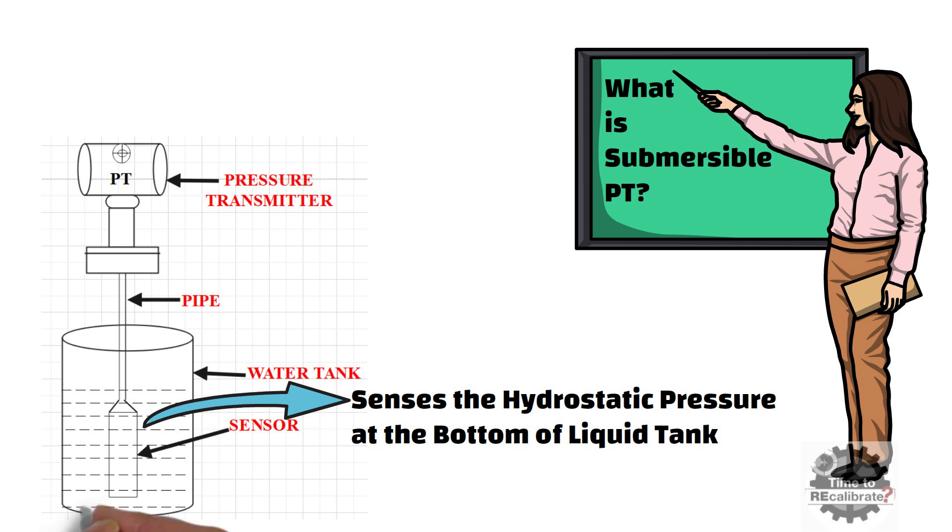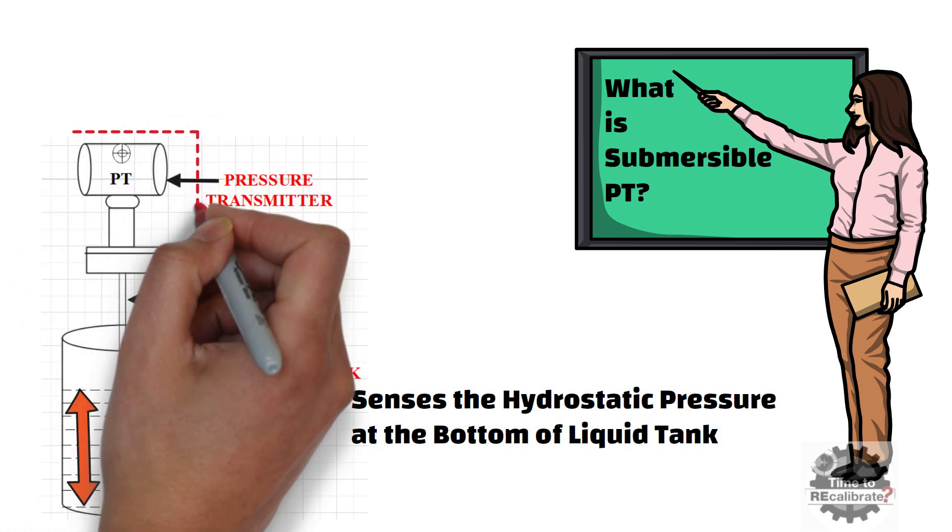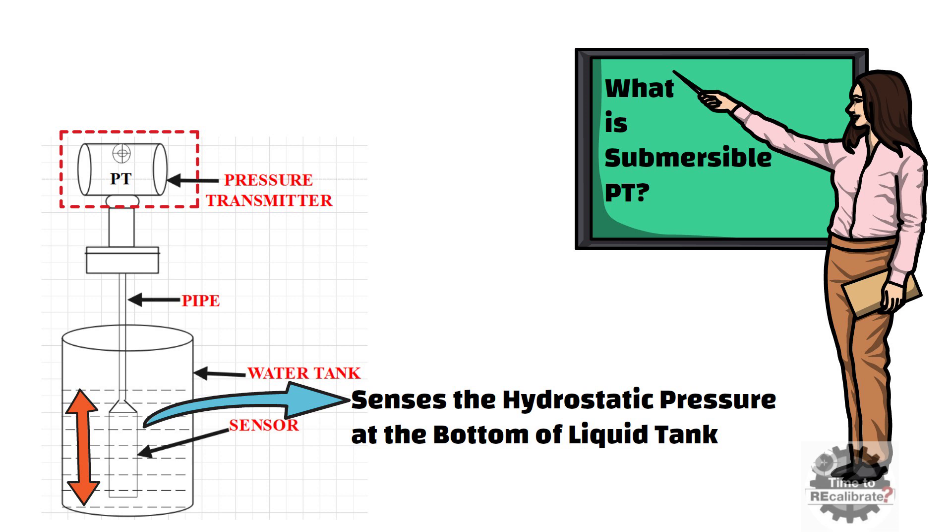It is designed for continuous level measurement and transmits a current signal proportional to the water column to the upstream instrumentation. As you can see, the sensor part of the pressure transmitter can be directly placed into the liquid tank, and the transmitter can be installed at a safe working place.